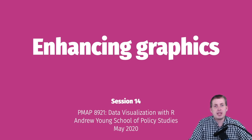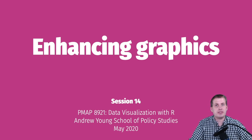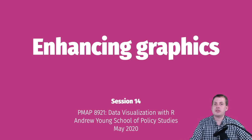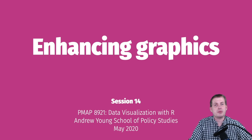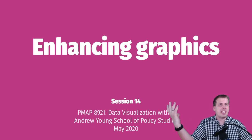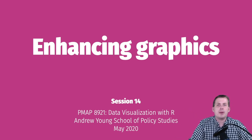Even the different policy centers here at Georgia State issue their own reports and often have a style they're supposed to follow. Or if you're trying to make a graphic that looks really cool and you want to use the CRAP principles — contrast, repetition, alignment, proximity — you want to make your graphic a lot nicer, add annotations, change the colors, and do fun things to it.